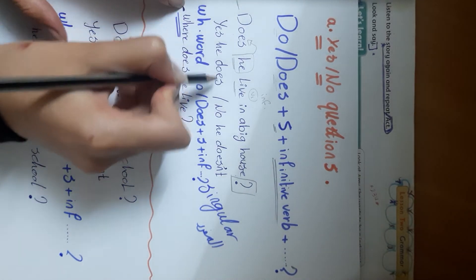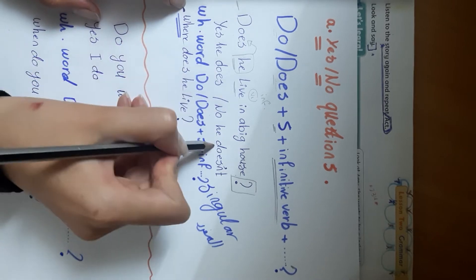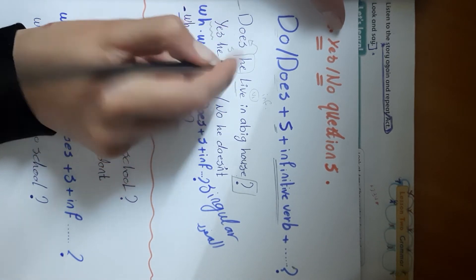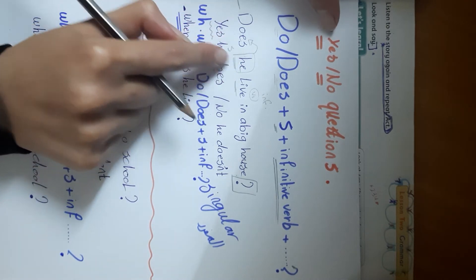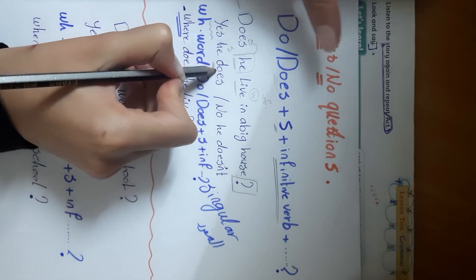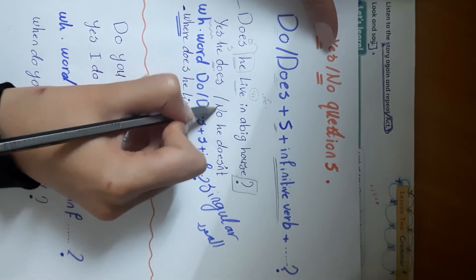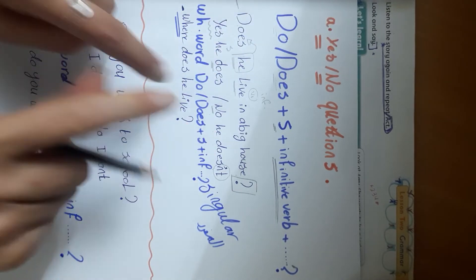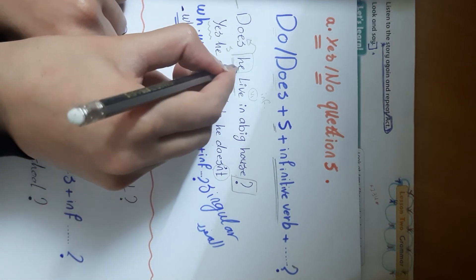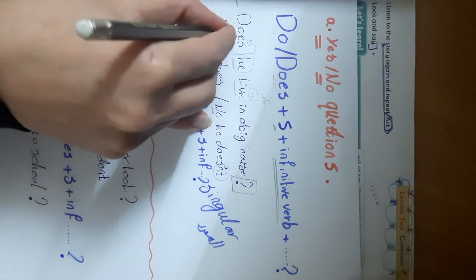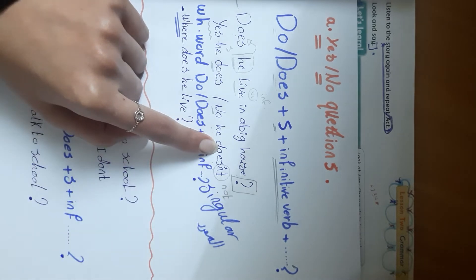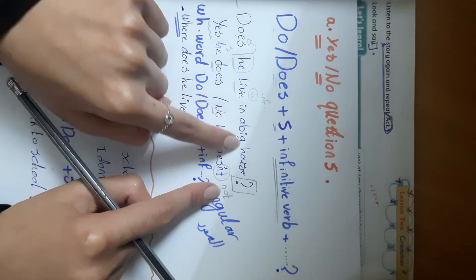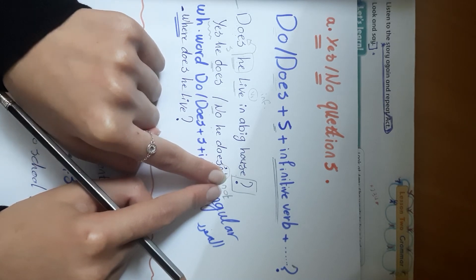How do we answer such a question? We answer: 'Yes, he does' or 'No, he doesn't.' Yes + subject + does. No + subject + doesn't — because 'no' always brings 'not' with it. Whenever you see 'no,' immediately add 'not.'